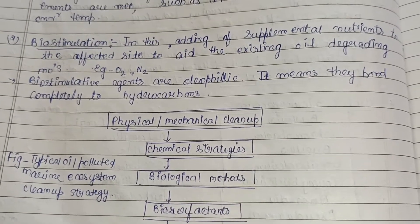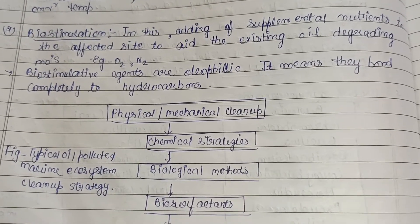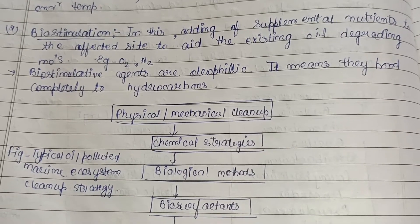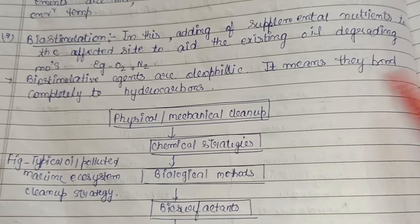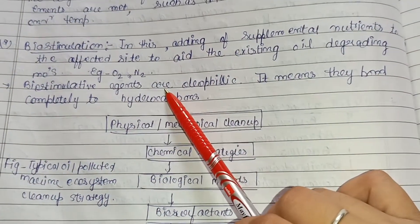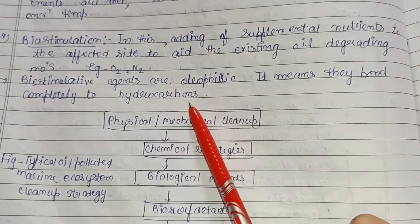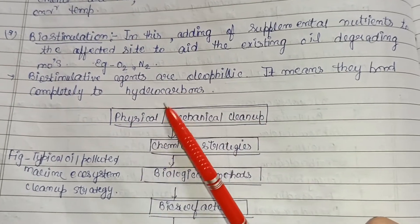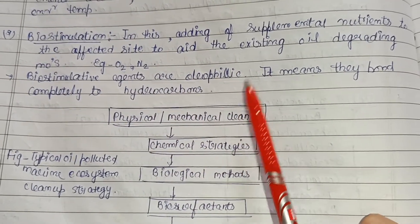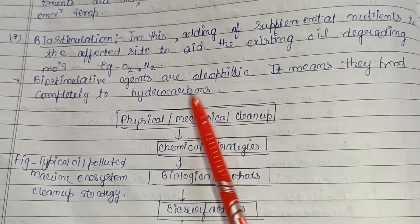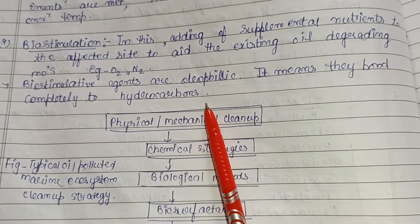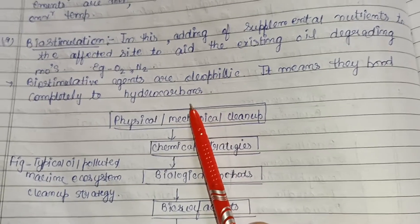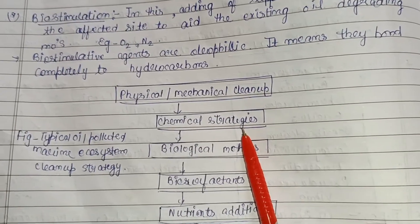The second method is bio-stimulation, which involves adding supplemental nutrients to the affected site to aid the existing oil-degrading microorganisms. This includes supplying oxygen and nitrogen in the form of nutrients so they can perform their activity effectively. The bio-stimulation agents are oleophilic, meaning they bond completely to the hydrocarbons present in the oil, enabling active biodegradation.